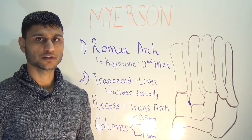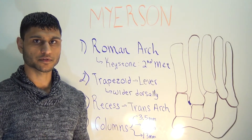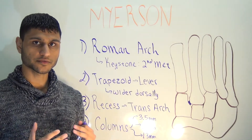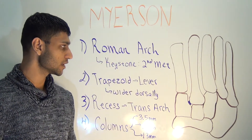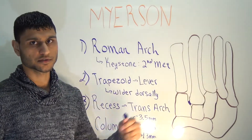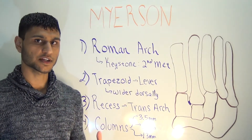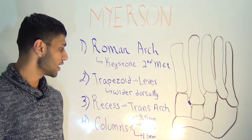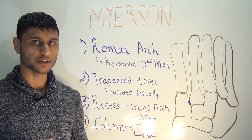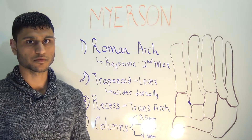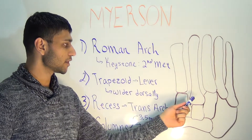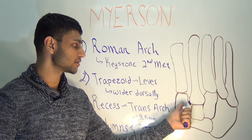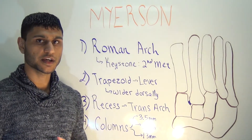In terms of biomechanics, the structure of the metatarsals and the cuneiforms is that of the Roman arch, with the highest point being the base of the second metatarsal, often referred to as the keystone. The middle three metatarsals and the cuneiforms, in cross-section, have a trapezoidal-shaped morphology — they are wider dorsally than plantarly. This provides stability and allows the midfoot to act as a rigid lever during gait. The second metatarsal base is held tightly in a recess between the first and third cuneiforms, maintaining a transverse arch.